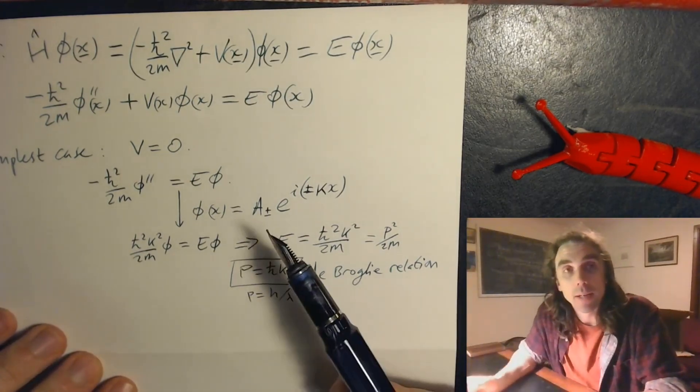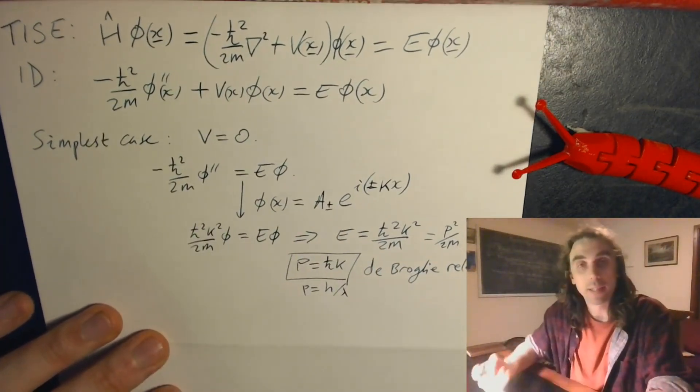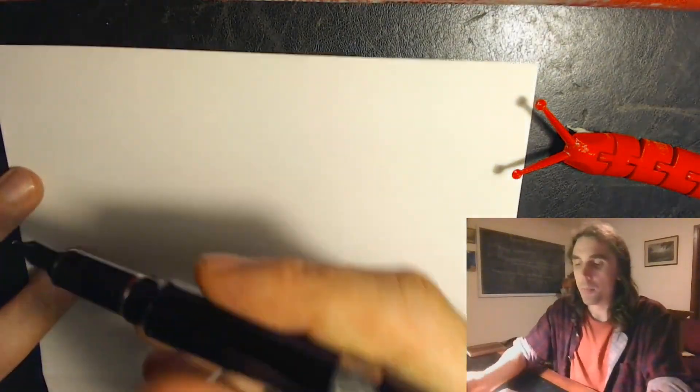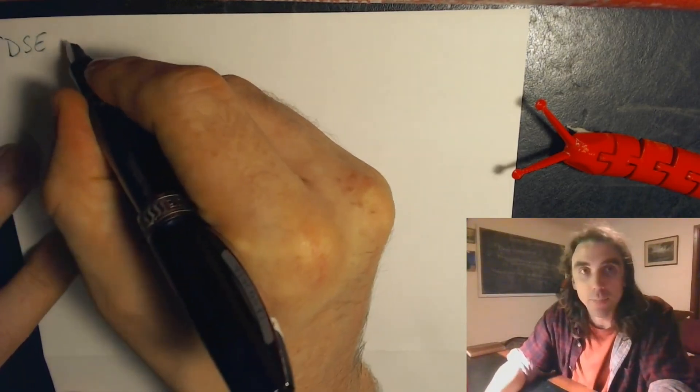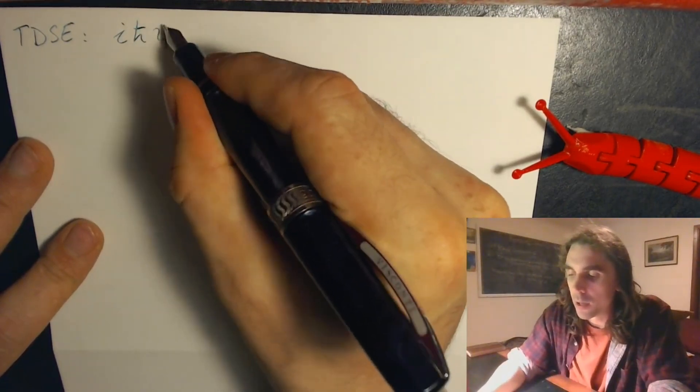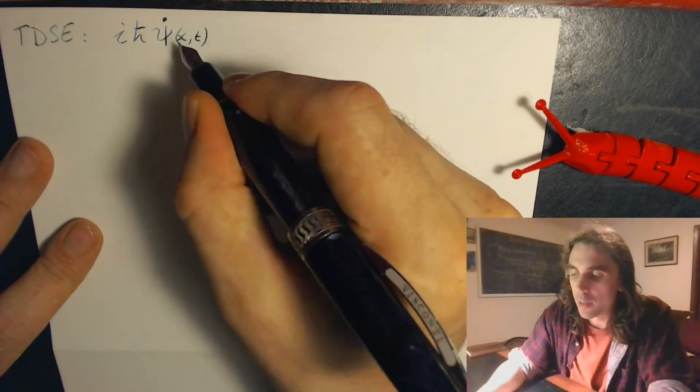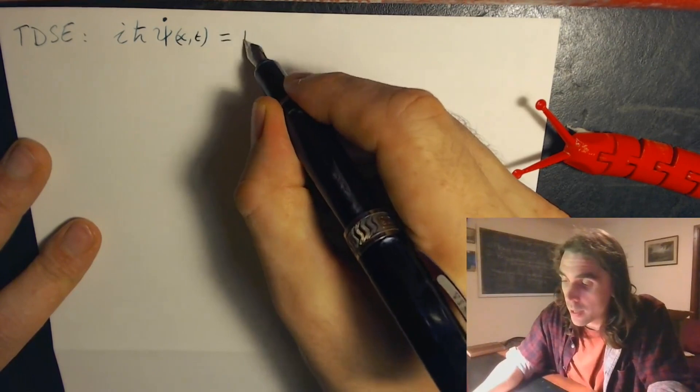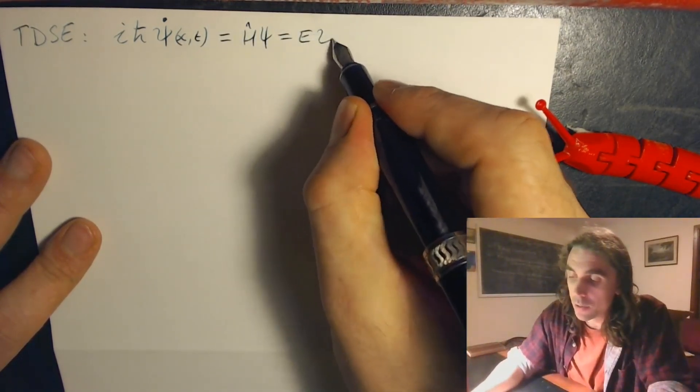I said that in general solving the time-independent Schrödinger equation is actually the tricky bit, the bit we've already done here. We then get the time dependence kind of for free. So let's take a look at the time-dependent Schrödinger equation, TDSE. This reads i h bar psi dot, where the dot indicates the partial derivative of psi with respect to time holding the position constant, equals h psi in general.